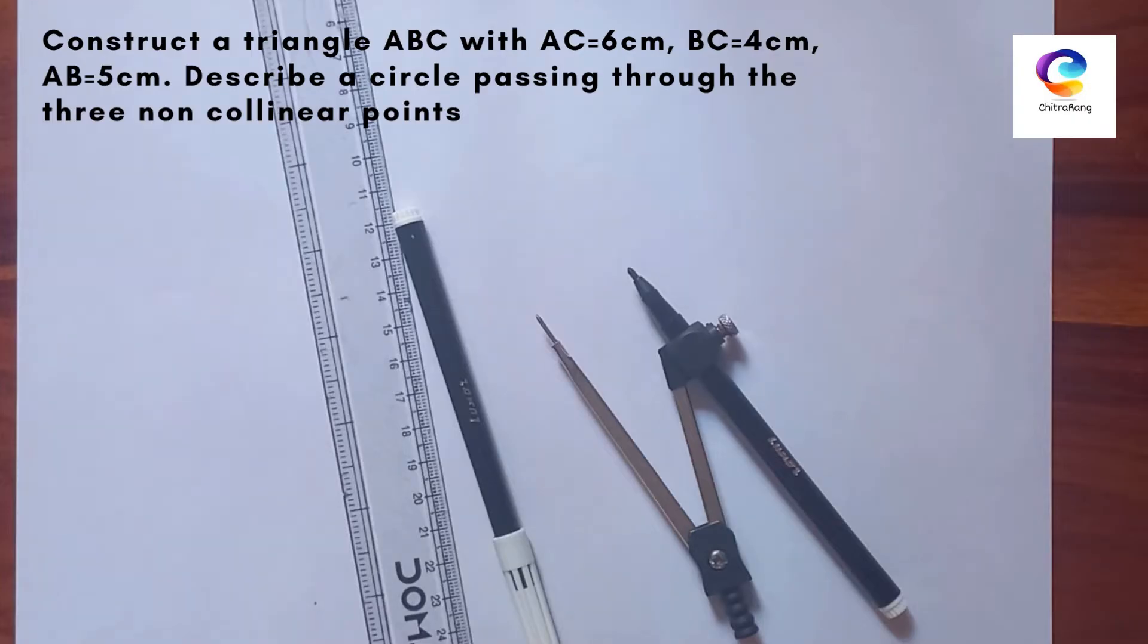The triangle sides are given: 6 cm, 4 cm, and 5 cm. We need to describe a circle passing through these three points ABC.